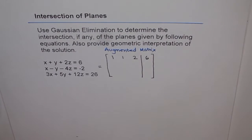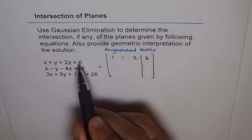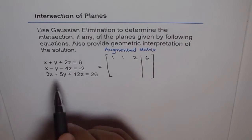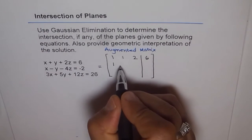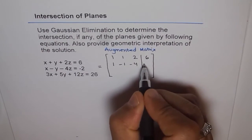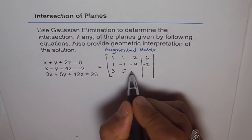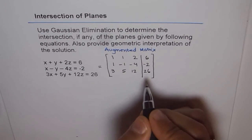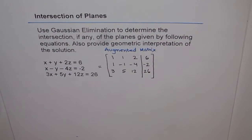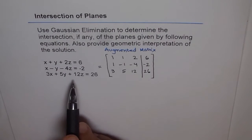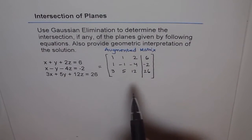In the augmented matrix, we have coefficients on the left side and on the right side of the line we have the constants to work with. The coefficients for the next plane are 1, minus 1, minus 4, which equals minus 2. And the third one is 3, 5, and 12, giving us 26. That is the first step: writing the augmented matrix, with variable coefficients on the left and values on the right.